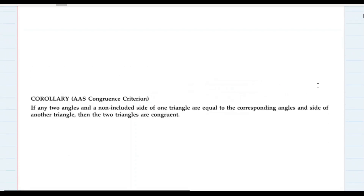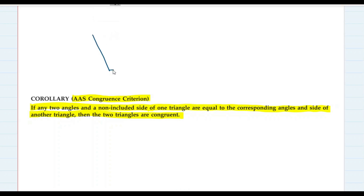There is one more corollary with ASA — that is AAS, angle angle side congruence criteria. If any two angles and a non-included side of one triangle are equal to the corresponding angles and side of another triangle, then the two triangles are said to be congruent by the AAS test.